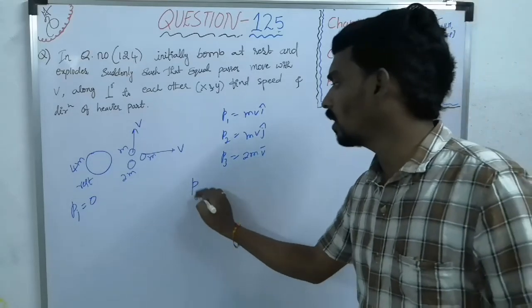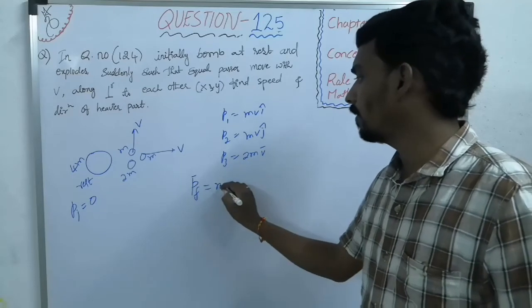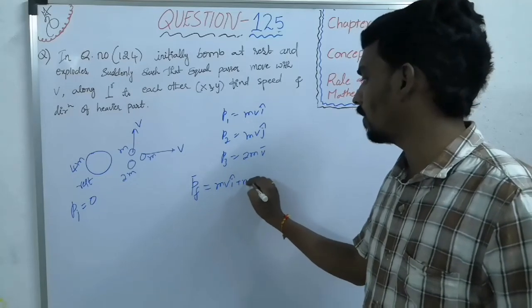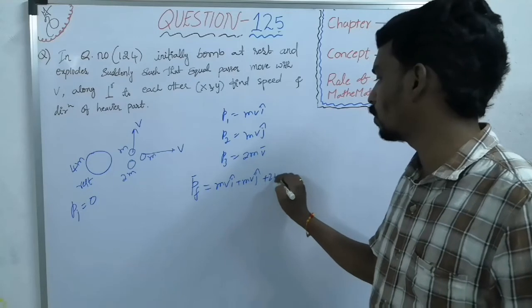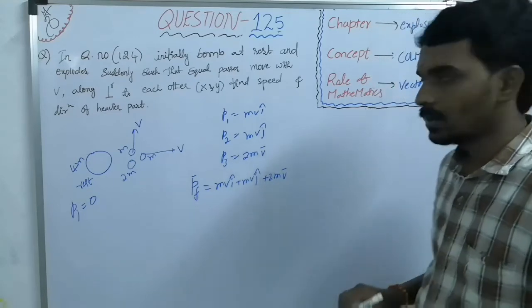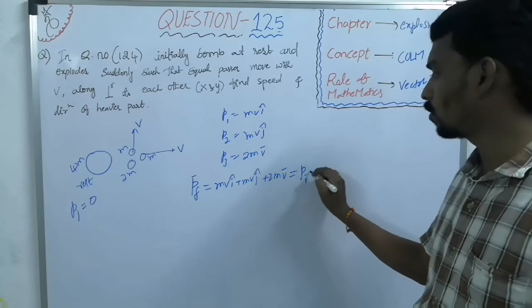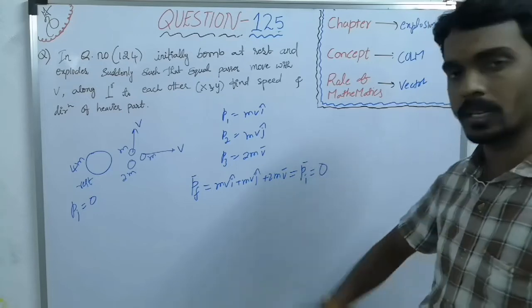So that, the total final linear momentum will become mv i cap plus mv j cap plus 2m v bar. But according to conservation of linear momentum, this should be equal to initial linear momentum zero.